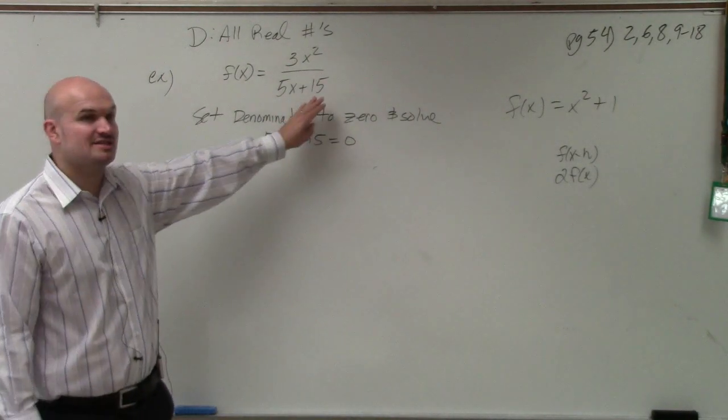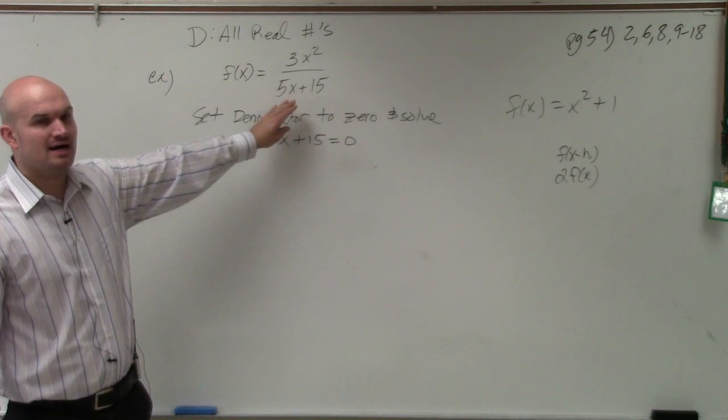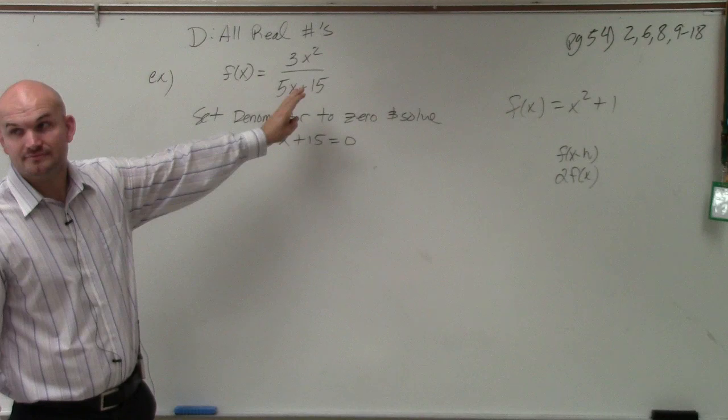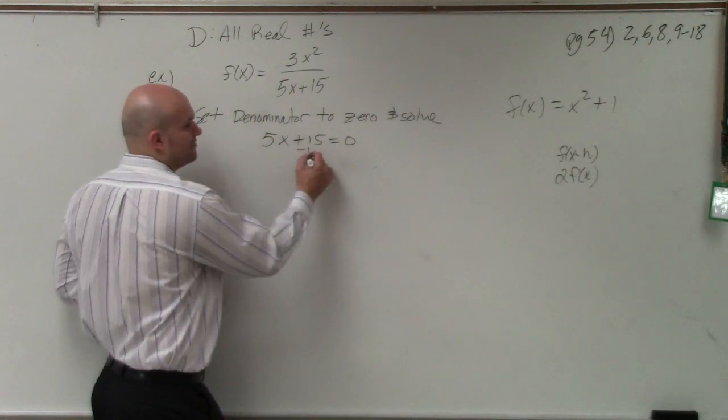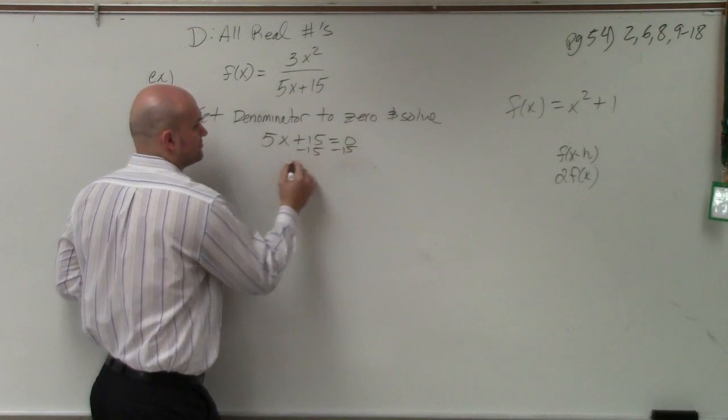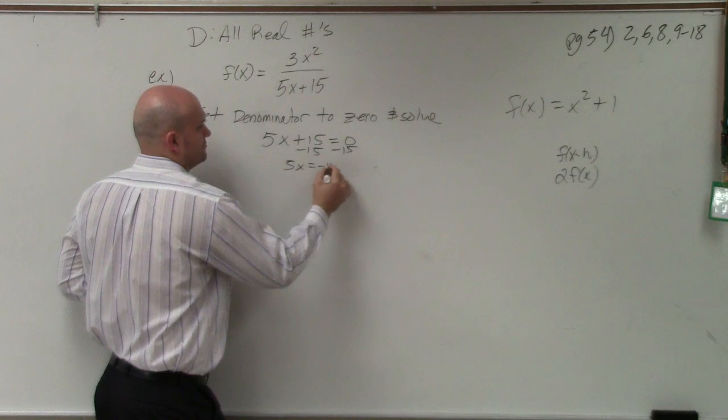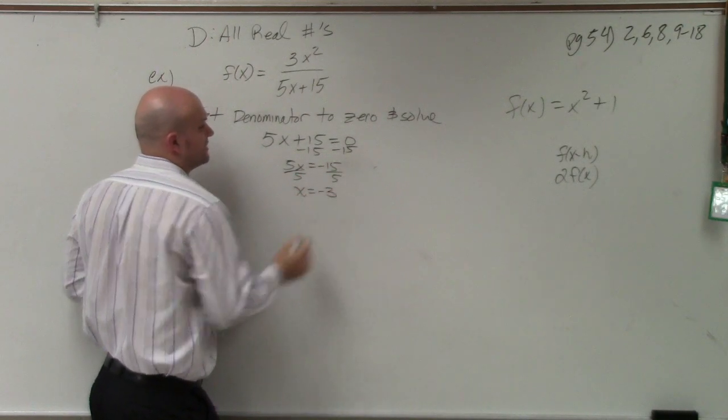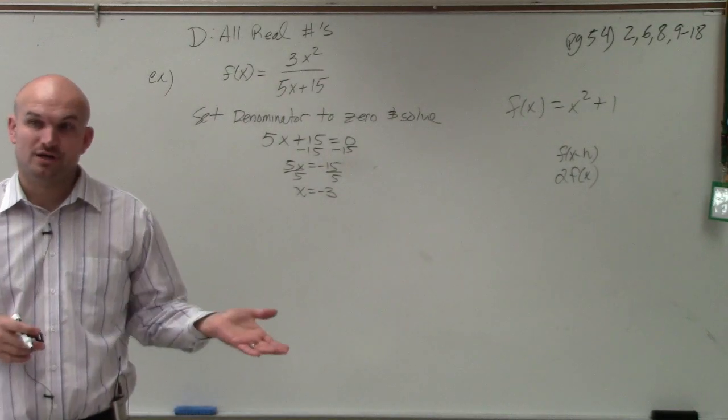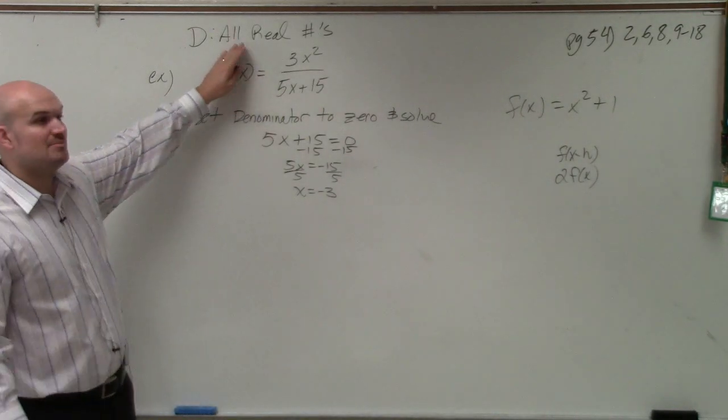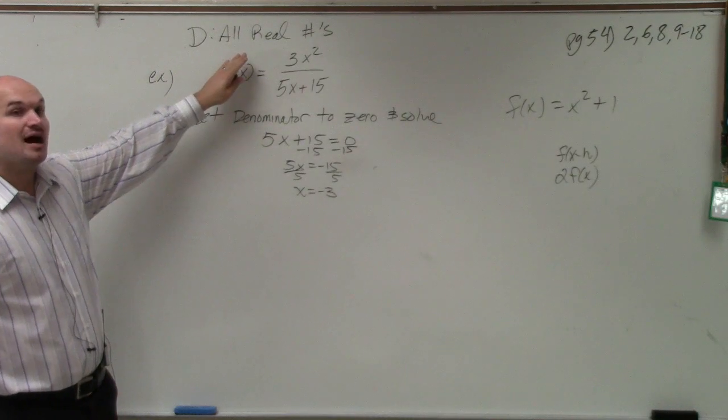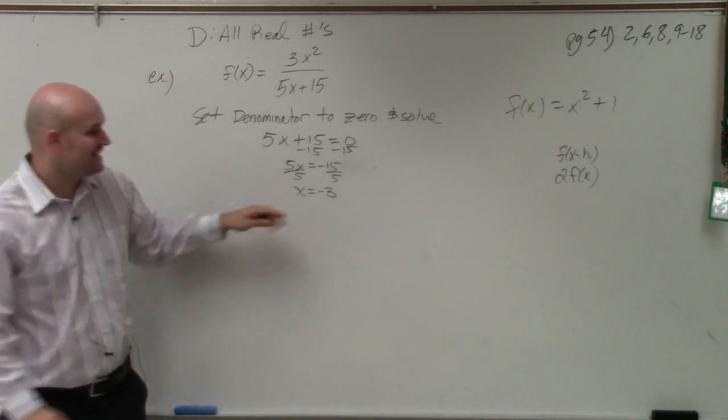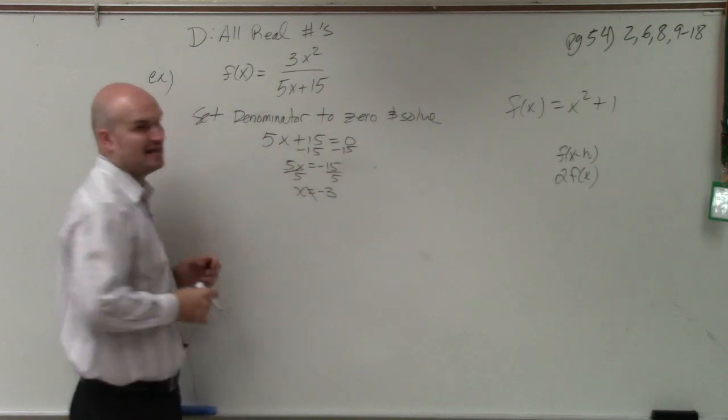Because if my denominator is equal to zero, it can't be a part of my domain. So I solve. So the only number that does not work - my implied domain was all real numbers. However, based on those two restrictions I wrote down, x cannot equal negative three.